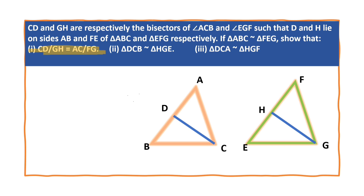Where is CD? This is CD. Where is GH? This is GH. This is CA and this is GH. So our required triangles are triangle DCA and triangle HGF.